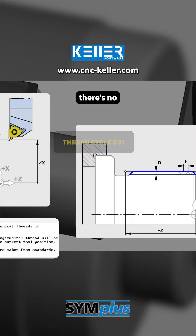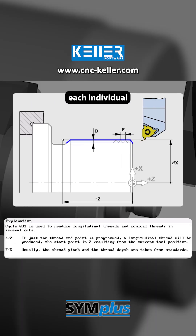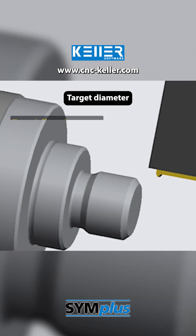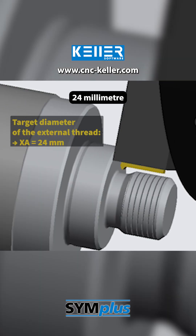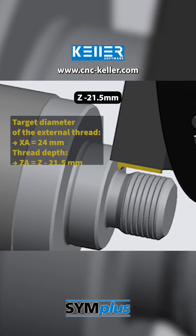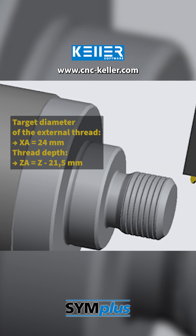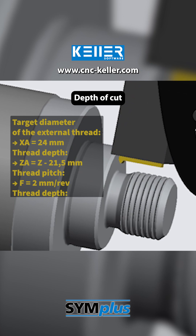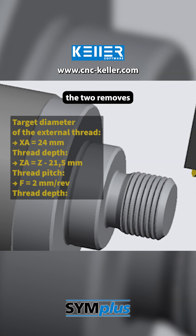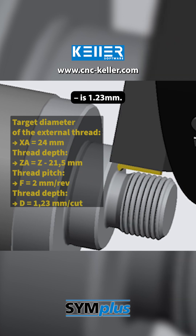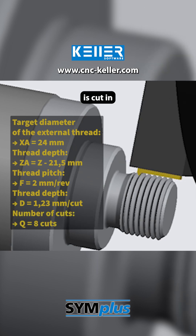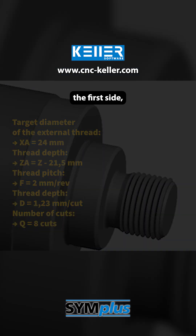Thanks to the cycle, there's no need to program each individual pass of the tool. Instead, you simply enter a few important parameters. In this program that means: target diameter of the external thread 24 mm, thread depth Z -21.5 mm, thread pitch 2 mm per revolution, depth of cut per pass — meaning how much material the tool removes in a single pass — is 1.23 mm, and number of passes is 8. This means the thread is cut in 8 steps.